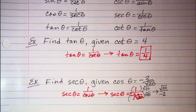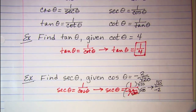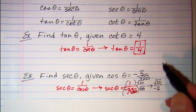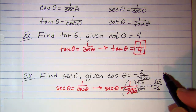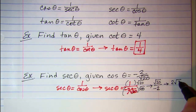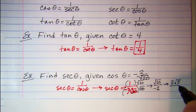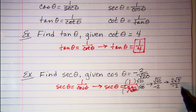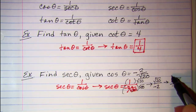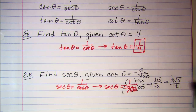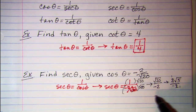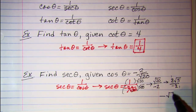We know that square root of 20 is 2 root 5, so the 2's cancel and we have negative square root of 5.